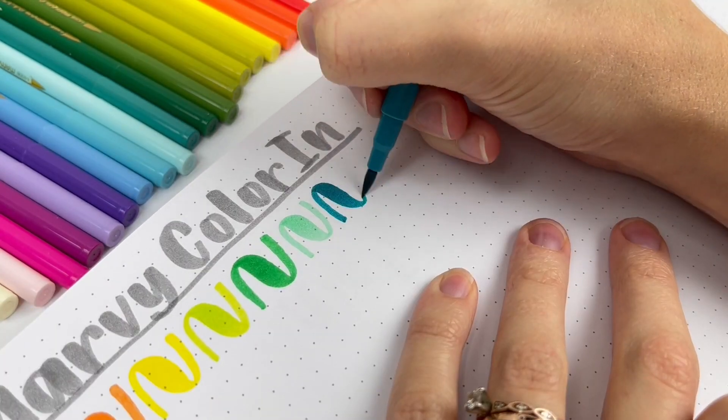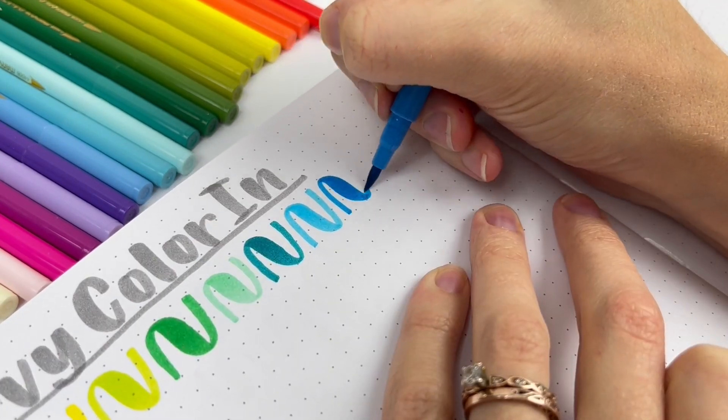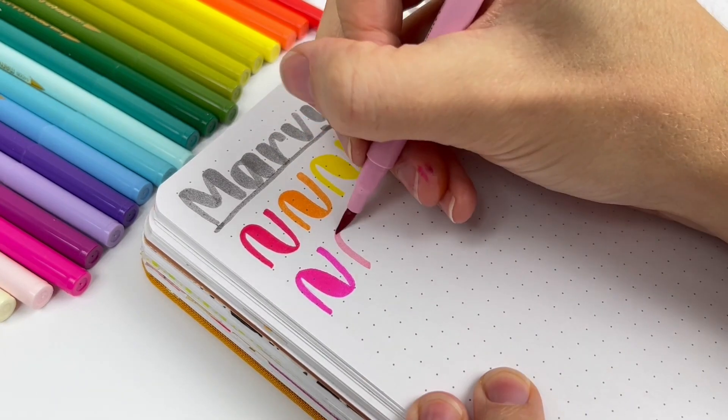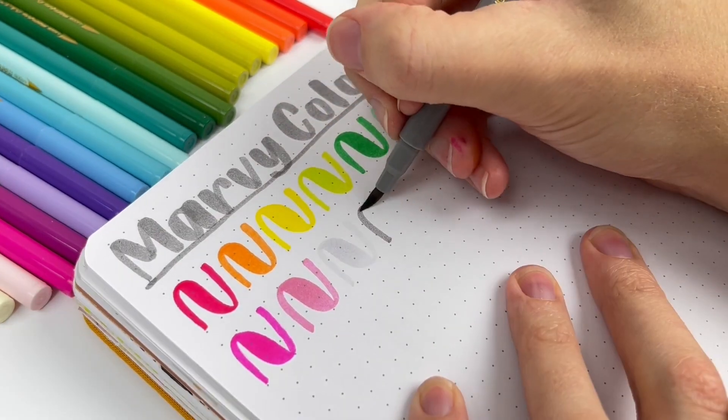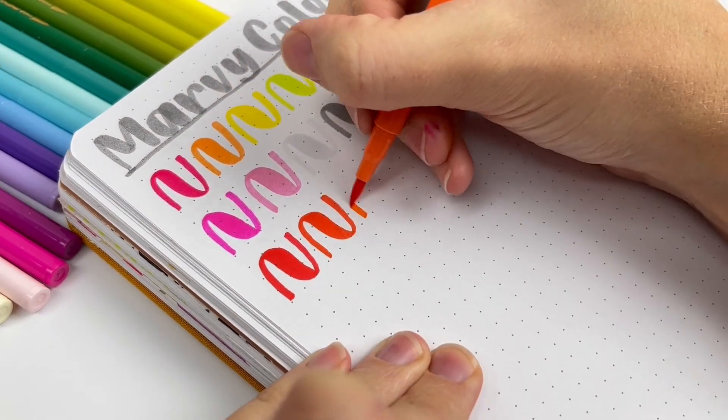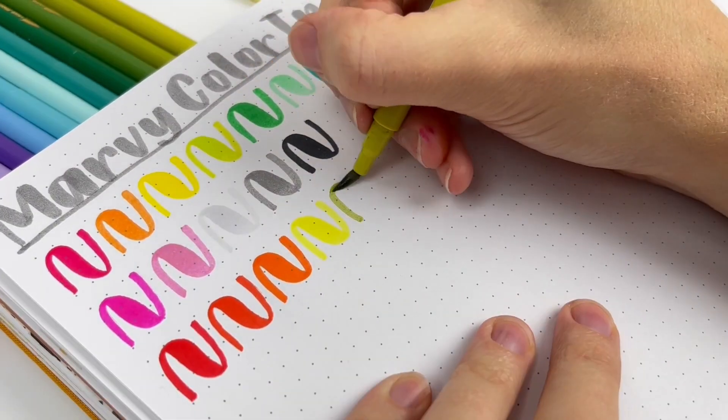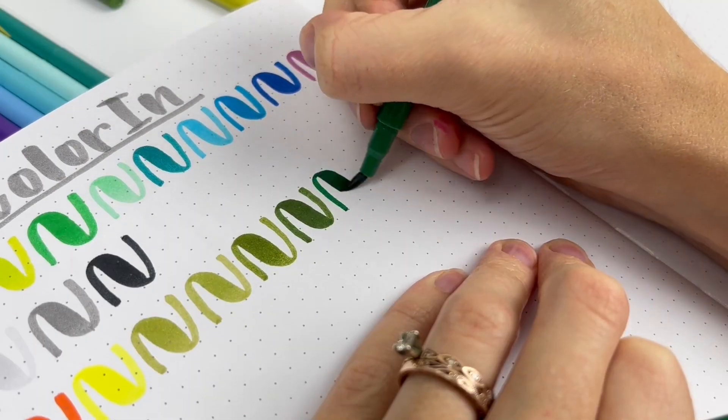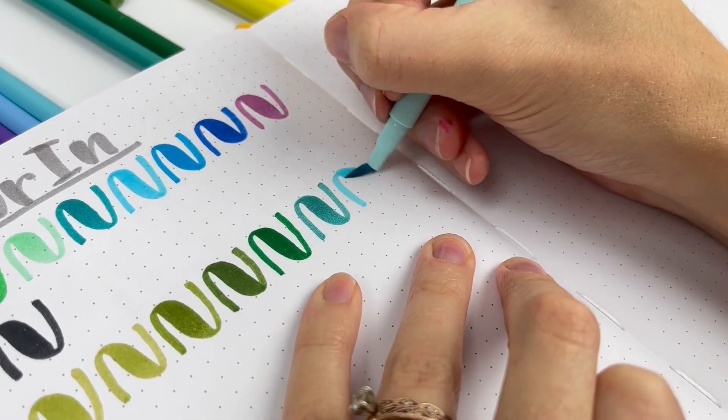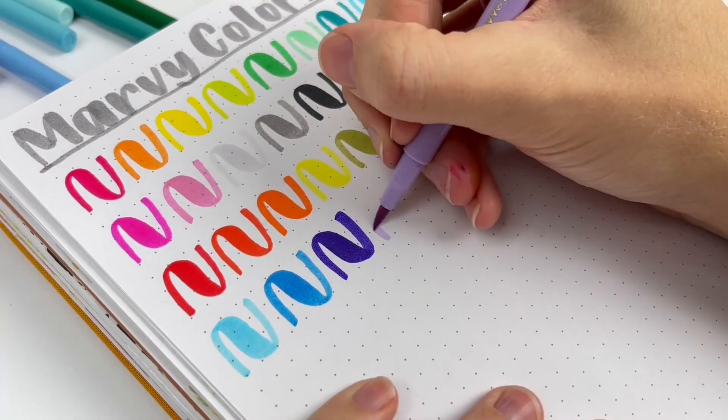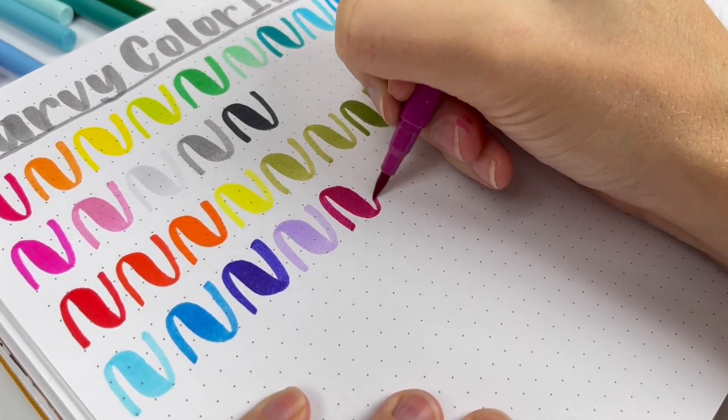They come in sets of 10 and there are four different sets, so 40 total and I have all of them. I used to see them in stores more, but I think now the best place to find them is Amazon or the Marvy website. If you know of other good places to find them, let me know. I'm going to keep the colors that I love, of course, and then I'm gonna offer the rest of these colors to my newsletter subscribers, and I hope someone else can enjoy how amazing and chunky these brush pens are.